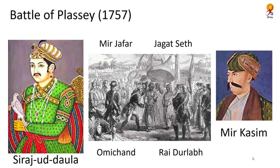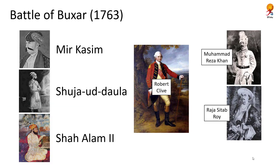Soon, Mir Jafar was abandoned by the British in favour of Mir Qasim, who agreed to terms such as ceding the districts of Burdwan, Midnapur, and Chittagong to the British, paying all of Mir Jafar's outstanding dues, and paying a yearly sum of 5 lakh rupees towards the company's war efforts — all in order to succeed to the throne of Bengal. However, he was soon left disenchanted with the British, and thus we come to the Battle of Buxar.